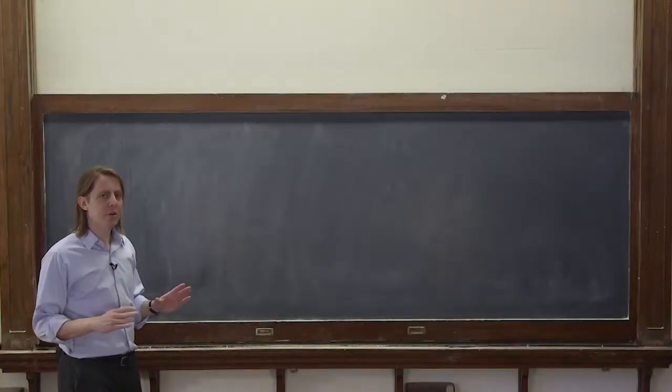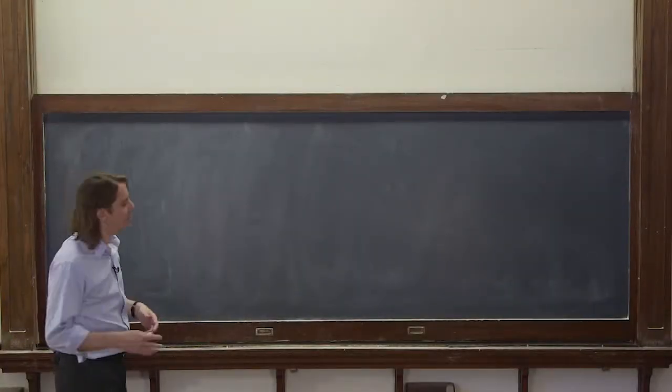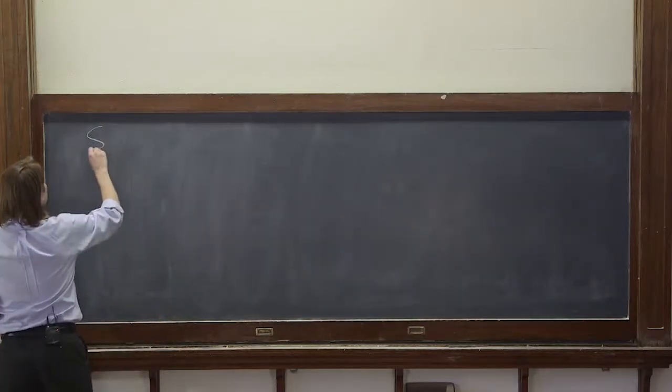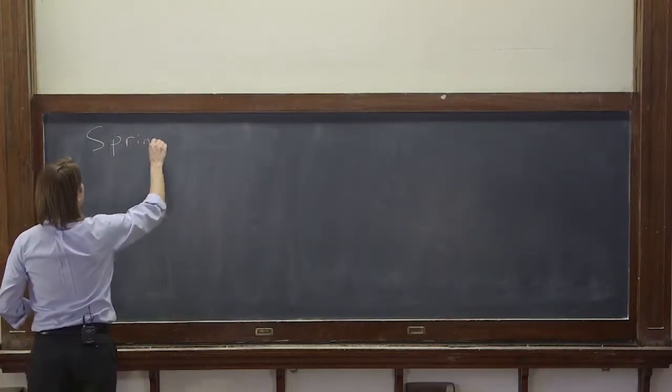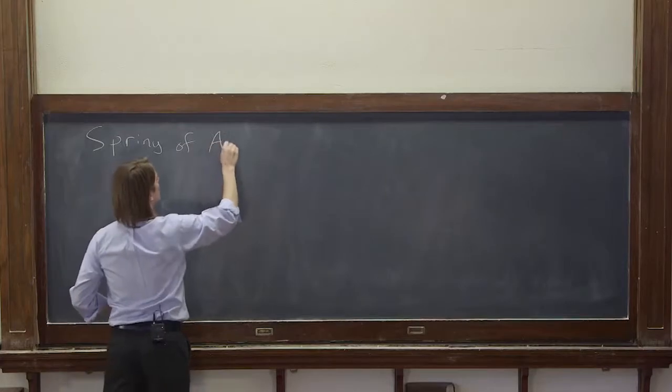Our mass in a spring was linear because we said it was linear, f equals minus kx. Now let's look at one that won't be linear: the spring of air.